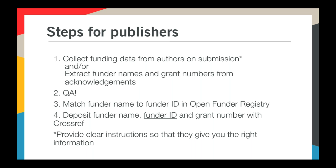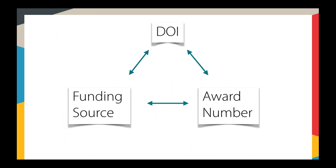The way that most of the submission system vendors have tried to help authors get to the correct funder name is by integrating the Open Funder Registry, so it sits behind their systems. It works in different ways — some use drop-down navigation, others show names appearing as you type, so it guides the author to pick the correct name for that organisation. Once that information has been deposited at Crossref, we have the DOI of the piece of content tied to the funding source and the award number, making each piece of information discoverable via any of the others.